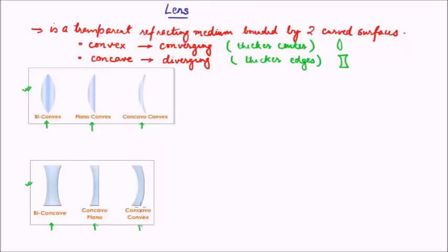The third concave subcategory — I think the name has been mistakenly written as concavo-convex; this should be convexo-concave, sorry for that. Basically this is a concave lens where one surface is convex and one is concave, but it falls under the concave category because the edge is thicker than the center. Now that we have seen the subcategories of the convex or converging lenses and the concave or diverging lenses, let us see what these two kinds of lenses do to light.